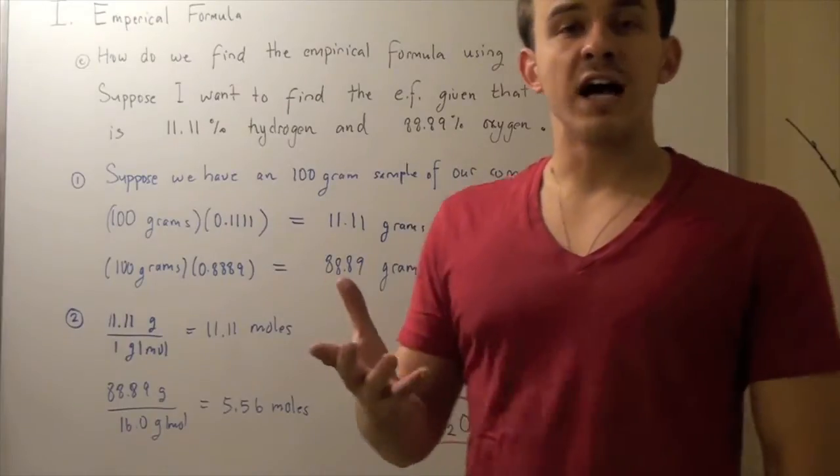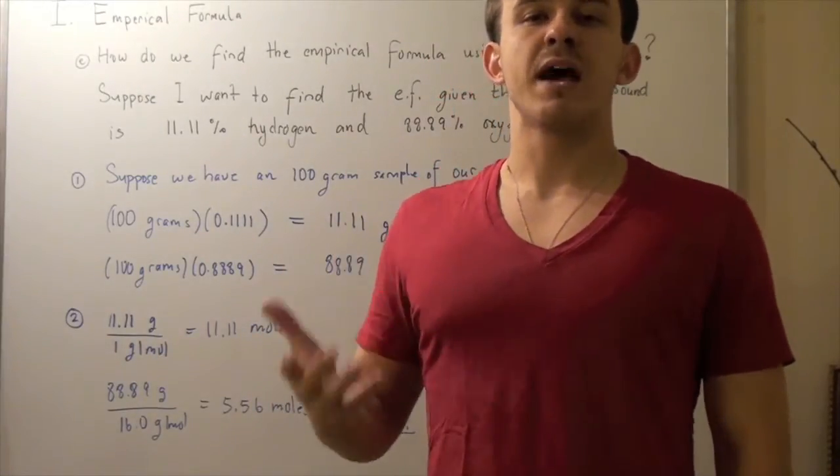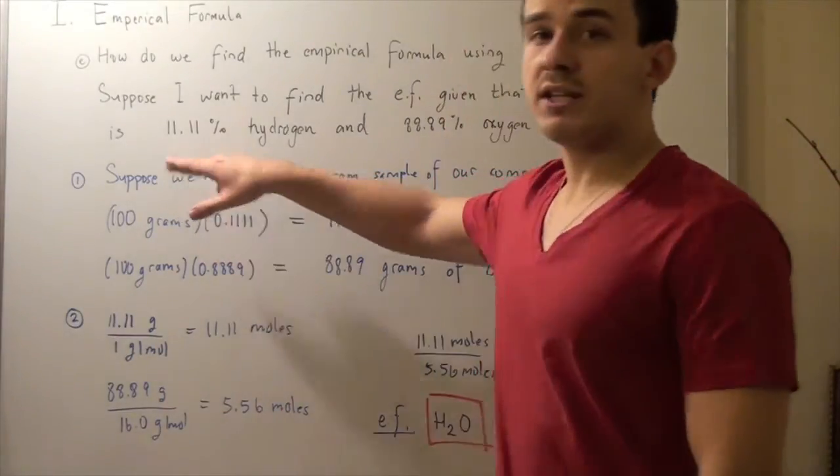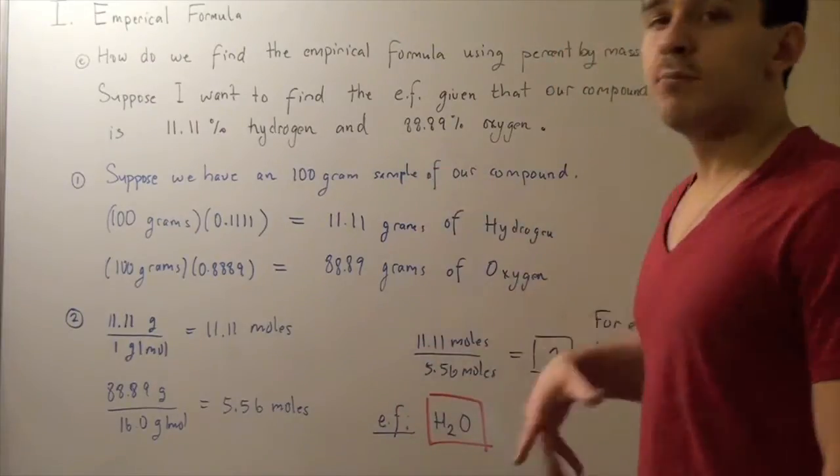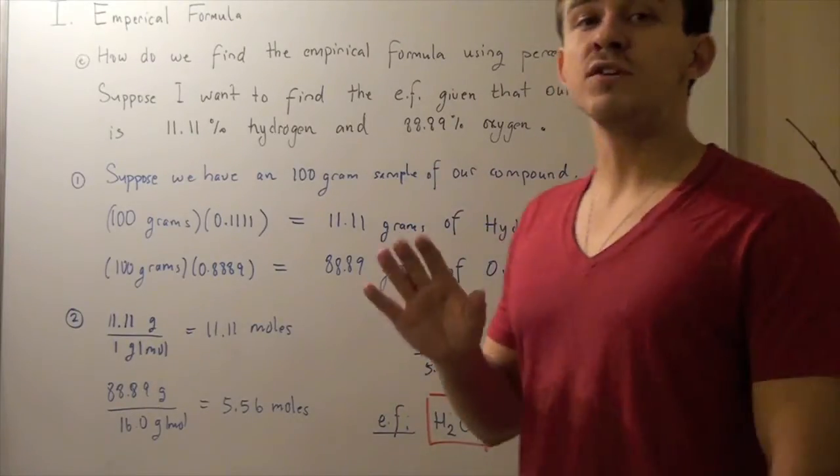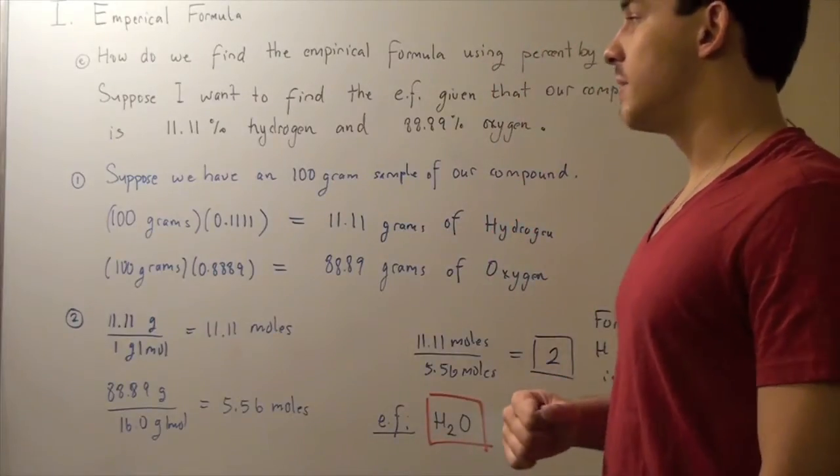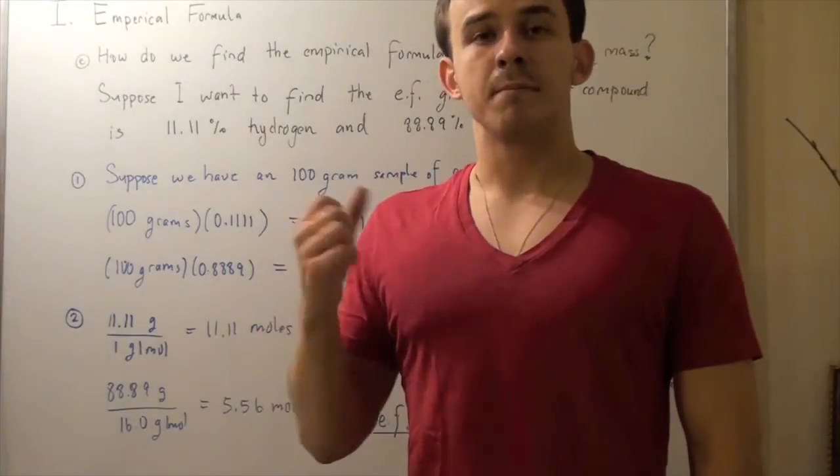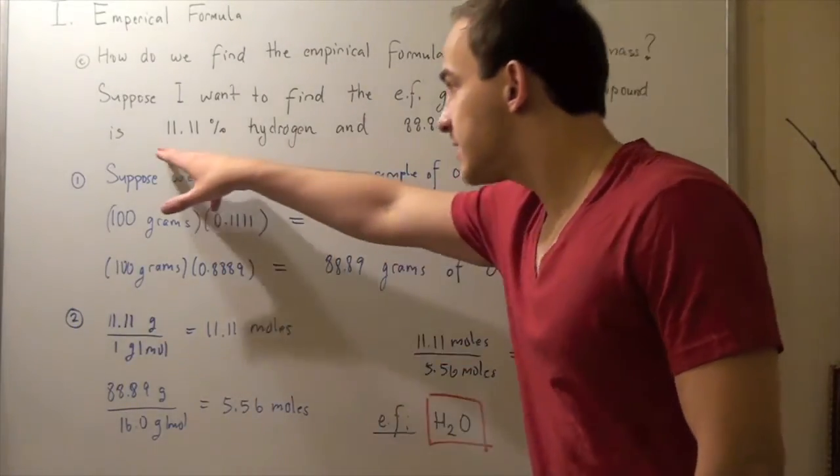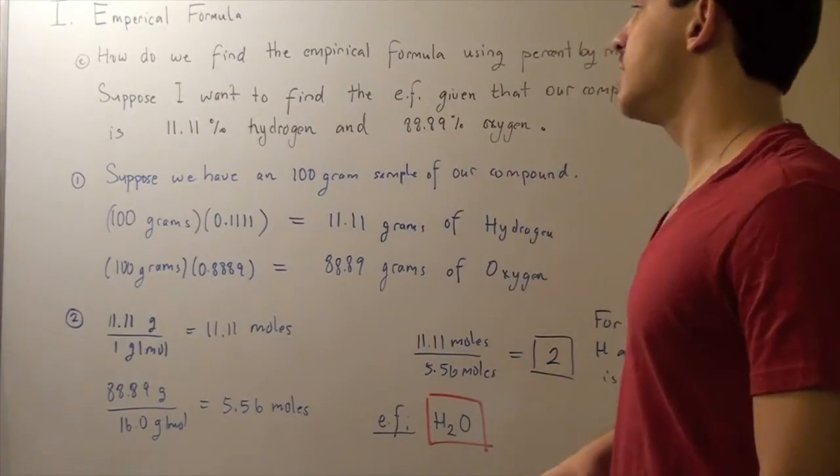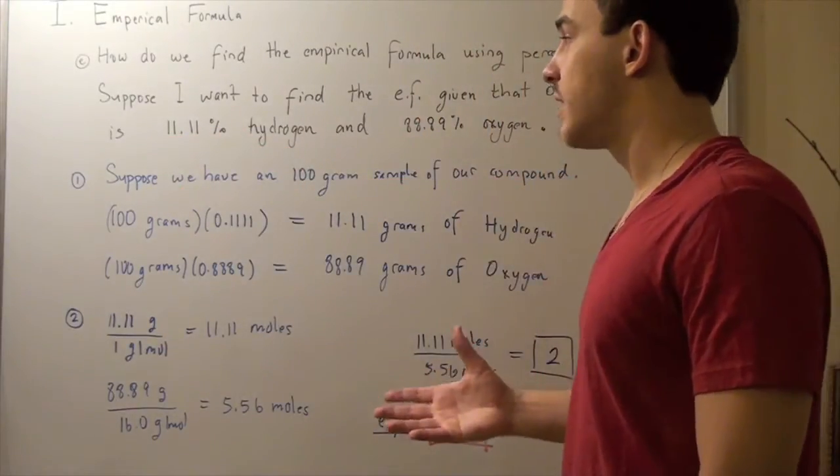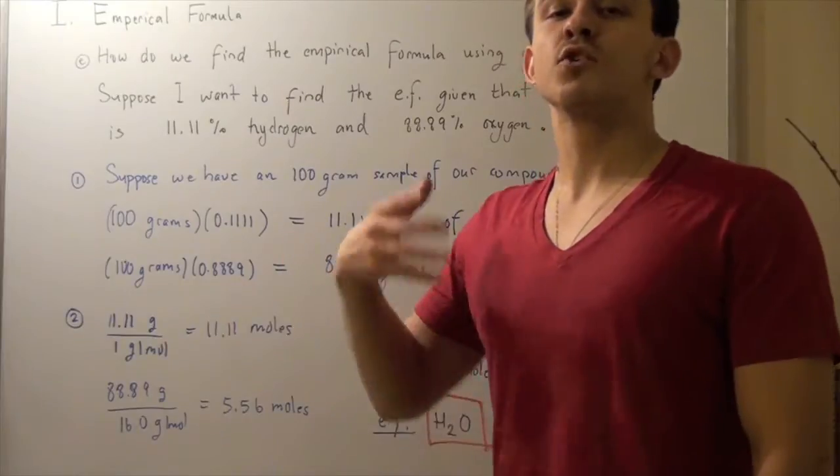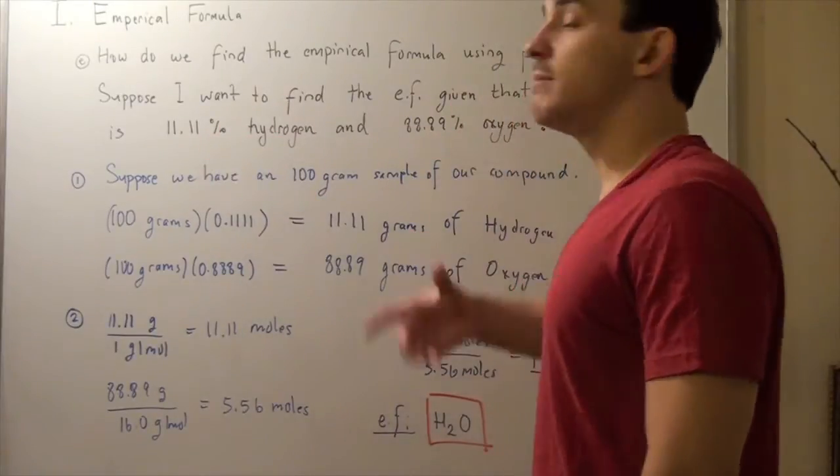So now, suppose I want to find my empirical formula given percent by mass. So suppose I'm given that my compound is 11.11% hydrogen and 88.89% oxygen. I have to follow three steps to find the empirical formula. In my first step, I make the assumption that I have 100 grams of my compound. And what I do is I convert this guy to fraction and this guy to fraction by dividing each guy by 100. And then I multiply each guy by my 100 grams of compound to find how many grams of each is in my compound.